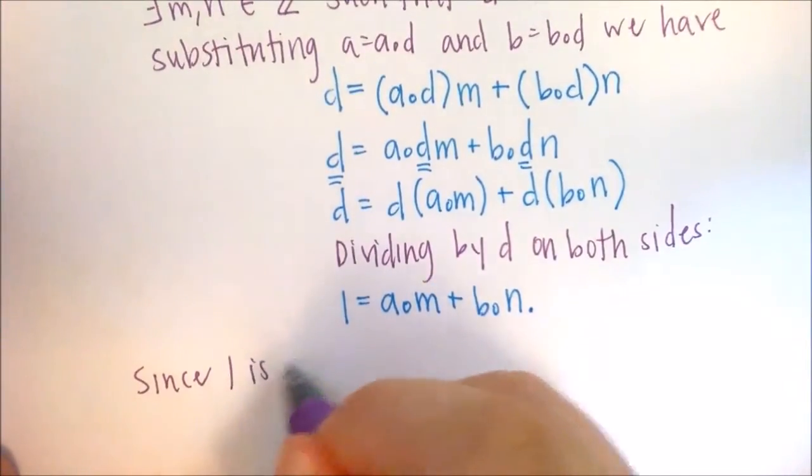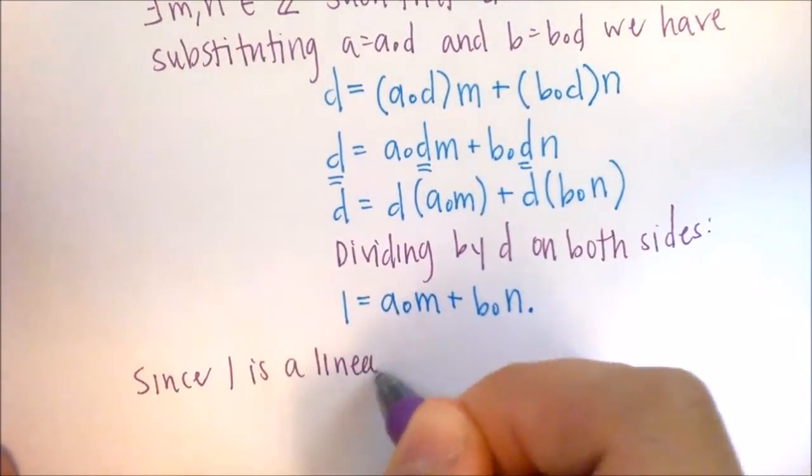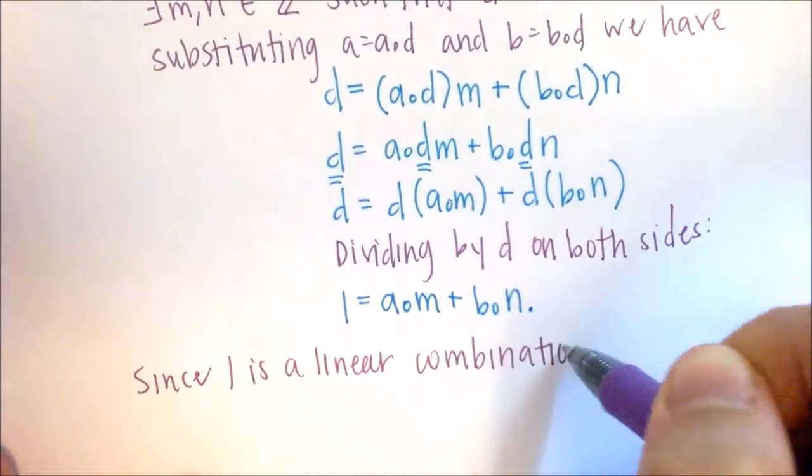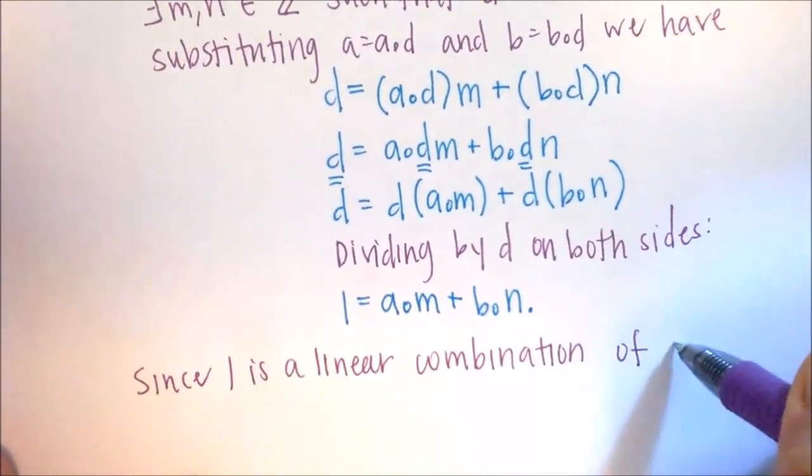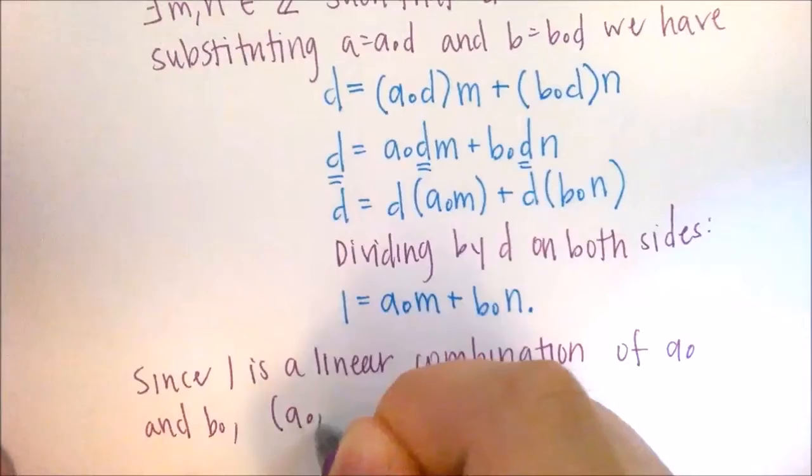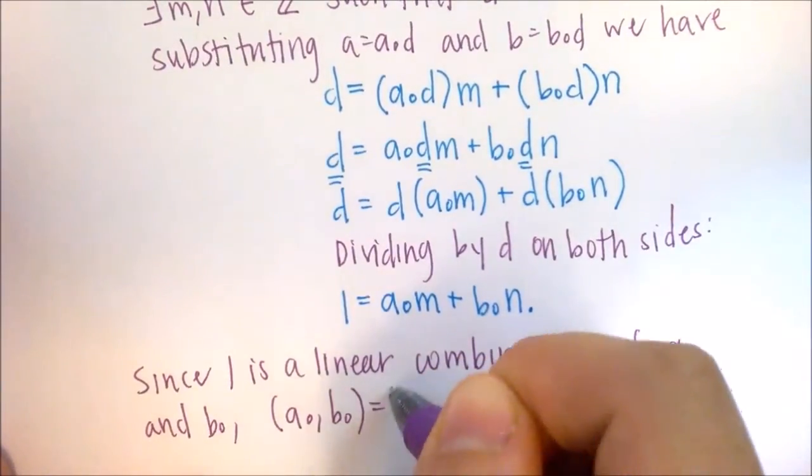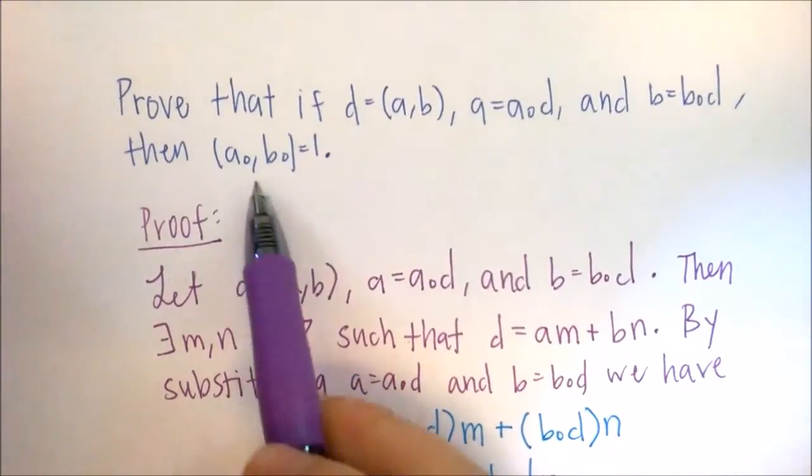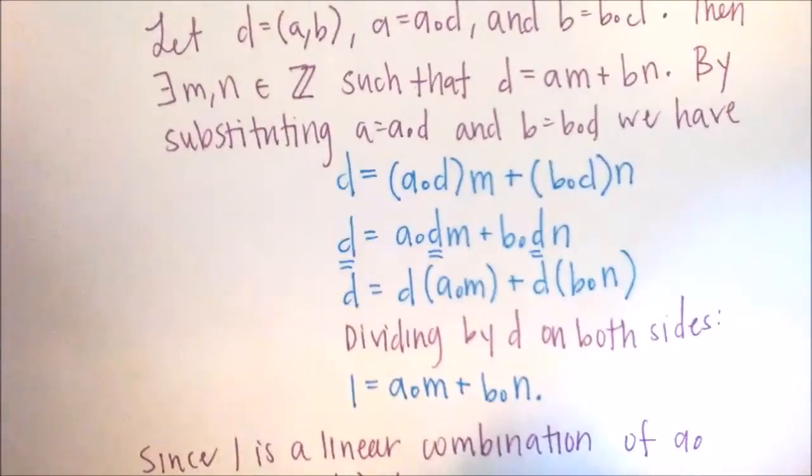since 1 is a linear combination of A0 and B0, the GCD of A0 and B0 is equal to 1. And that is what we wanted to prove. So that concludes this proof.